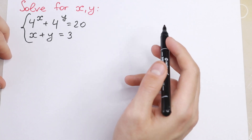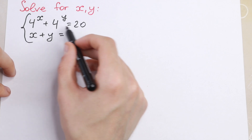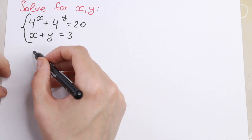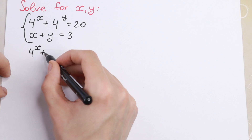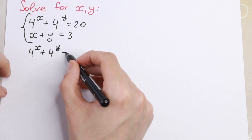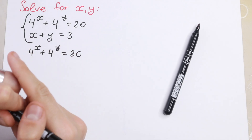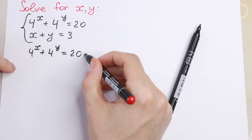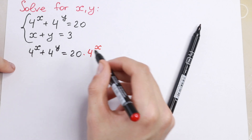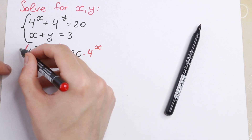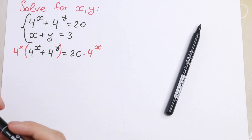First of all we need to know a really good trick. I will rewrite the first equation: 4 to the power x plus 4 to the power y equal to 20. Nothing changes if I multiply both sides by 4 to the power x — right here and right here.